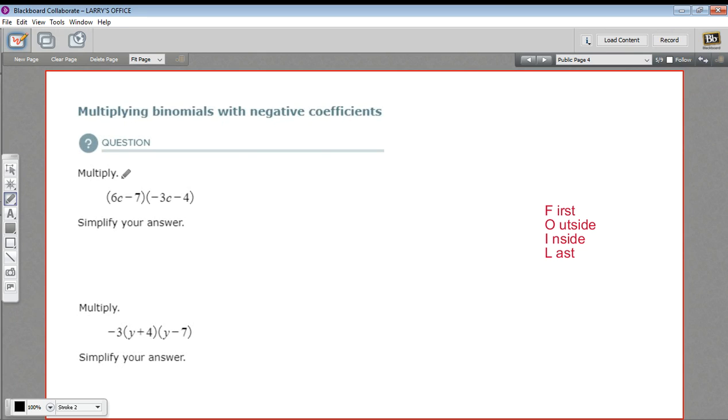Let's try this first one. Again, just foiling here, multiplying the first terms, I have 6c times a negative 3c. 6 times 3 is 18, so that's a negative 18. And c times c is c squared.